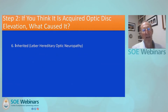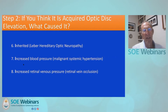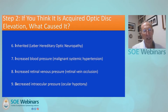Number six is inherited — Leber hereditary optic neuropathy — which produces optic disc swelling, usually in the peripapillary axonal layer. Malignant systemic hypertension produces vasogenic edema of the optic disc, and although less prominent than retinal abnormalities, it is a cause of acquired elevation. Number eight is increased retinal venous pressure from retinal vein occlusion, where the prominent retinal findings are the clue. And finally, decreased intraocular pressure — ocular hypotony — can also cause elevation of the optic disc.